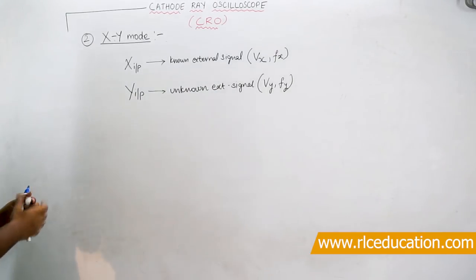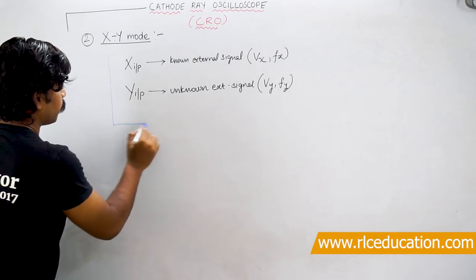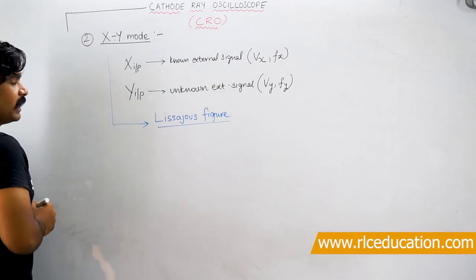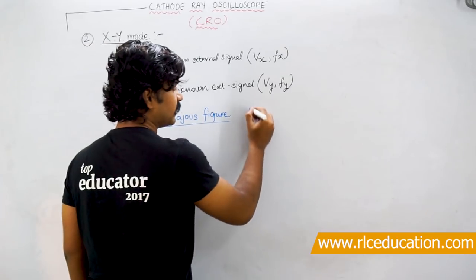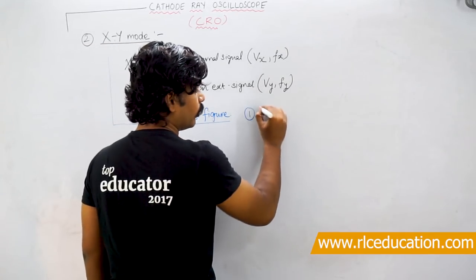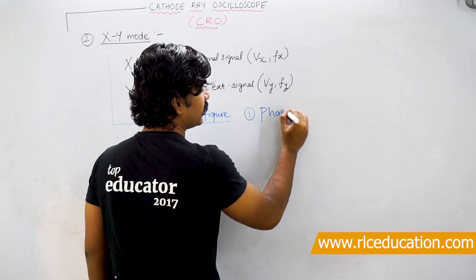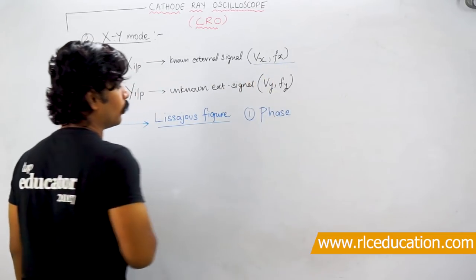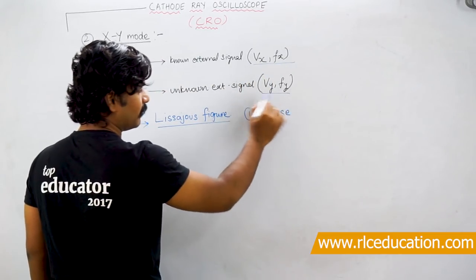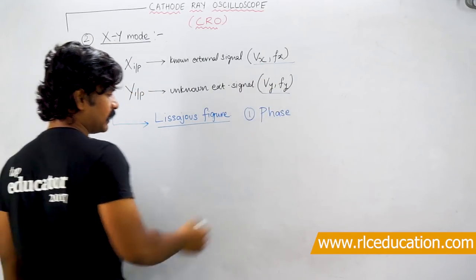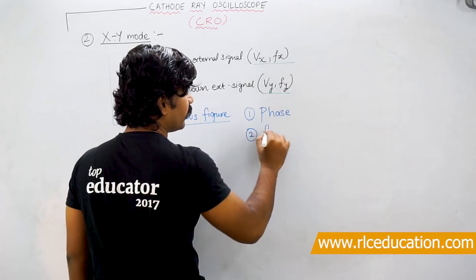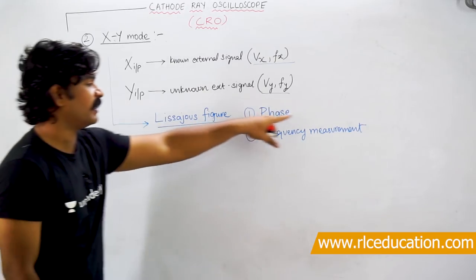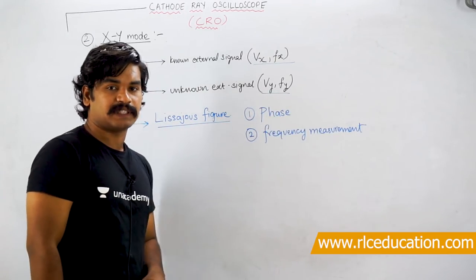When signals are applied in this way, the pattern produced on the screen is called a Lissajous figure. The purpose of Lissajous figures is to find the phase displacement or phase difference between both signals. If the phase of one signal is known, you can determine the phase of the other. XY mode is also used for frequency measurement.